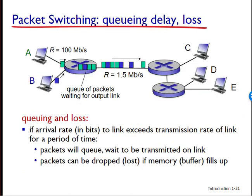Each packet switch has multiple links attached to it. A typical small link layer switch will have 8, 16, 32, 48, or more ports for attaching additional links. For each attached link, the packet switch has an output buffer or output queue, which stores packets that the router is about to send into that link.